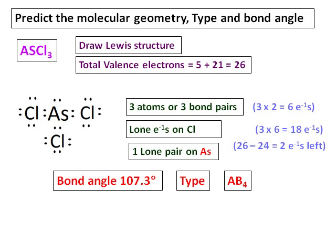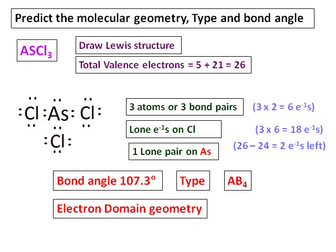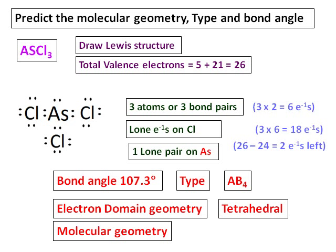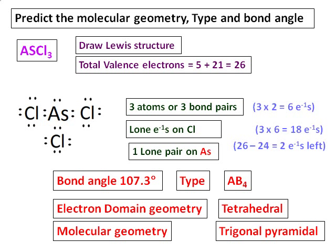AsCl3 is an AB4 type molecule. Since there are three bond pairs and one lone pair, the electron domain geometry is tetrahedral. But because of the presence of the lone pair, the molecular geometry changes and the bond angle is lower than the tetrahedral bond angle. The molecular geometry is trigonal pyramidal.